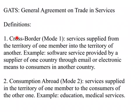Let us look at the different types of services. The first is called cross-border, or Mode 1. This refers to services supplied from one country into another country — for example, receiving software sold by India through email or electronic means. This is Mode 1.